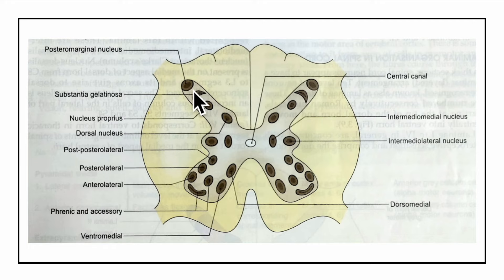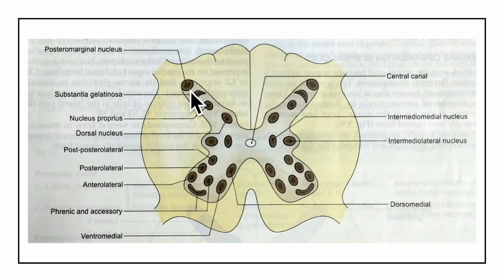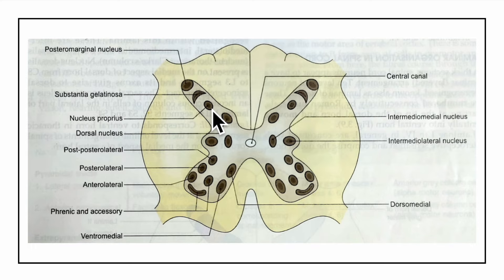In the posterior grey column there are four main afferent nuclei. First is the posteromarginal nucleus, a thin layer of neurons capping the posterior horn that receives some incoming dorsal root fibers. Second is the substantia gelatinosa, found at the tip of the posterior horn throughout the entire extent of the spinal cord. Third is the nucleus proprius, lying subjacent to the substantia gelatinosa throughout the entire extent of the cord. Finally, the nucleus dorsalis of Clark, also known as the thoracic nucleus, is at the medial part of the base of the posterior horn, extending from C8 to L3 segments.